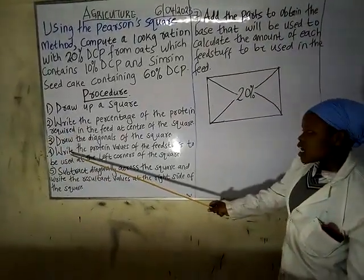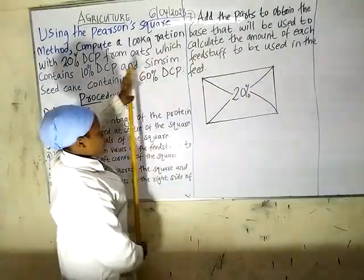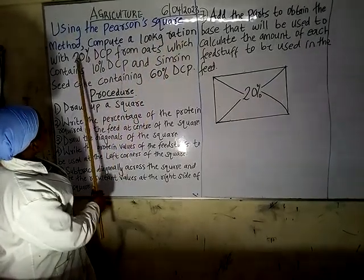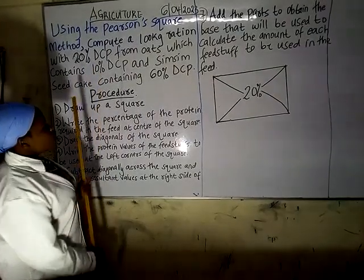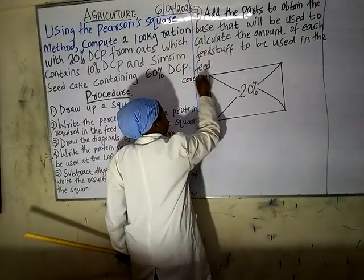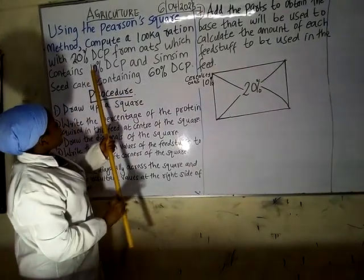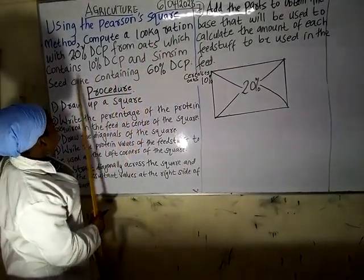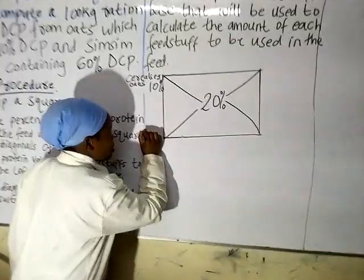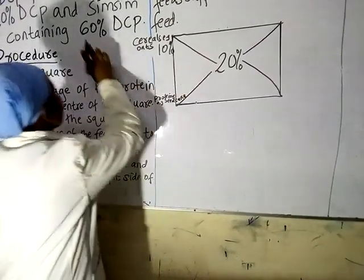Fourth, write the protein values to be used at the left corners of the square. At the top left corner, we write cereals, for example oats — 10 percent, because our question states it contains 10 percent DCP. Below that, at the bottom left corner, it is where we write proteins, for example seed cake, and we write 60 percent DCP.